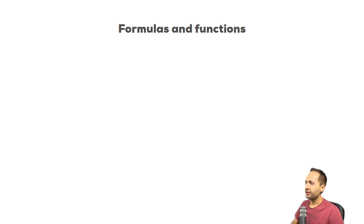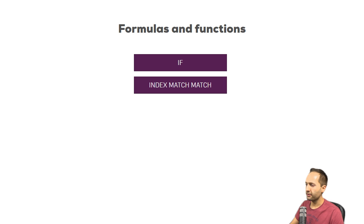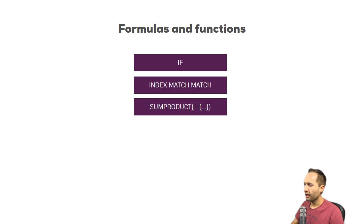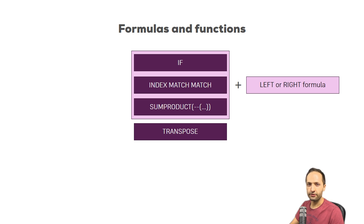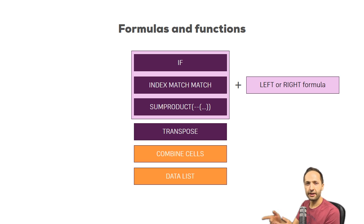Before we start, let's take a look at the formulas and functions we will use to create that analysis sheet. We will use the IF formula, the INDEX MATCH and INDEX MATCH MATCH formulas. We will also use SUMPRODUCT formulas with multiple conditions, and I will explain what those little dashes mean. These formulas will also be combined with a LEFT or RIGHT formula. In addition, we will talk about basic array formulas, the TRANSPOSE formula, how to combine cells, and how to create some nice data lists.